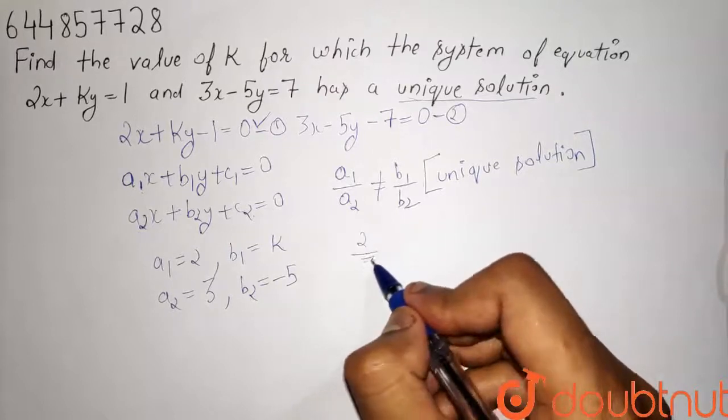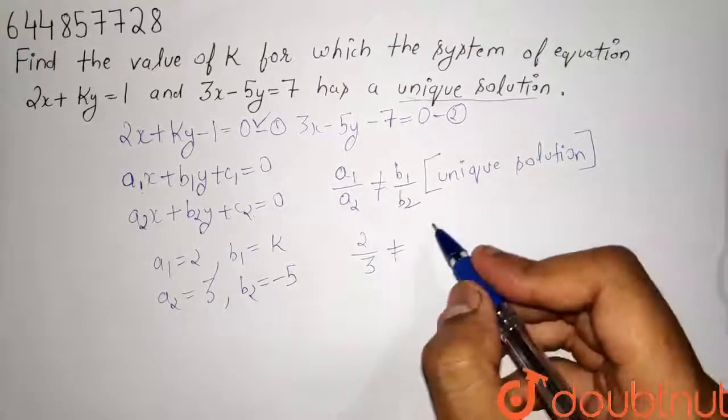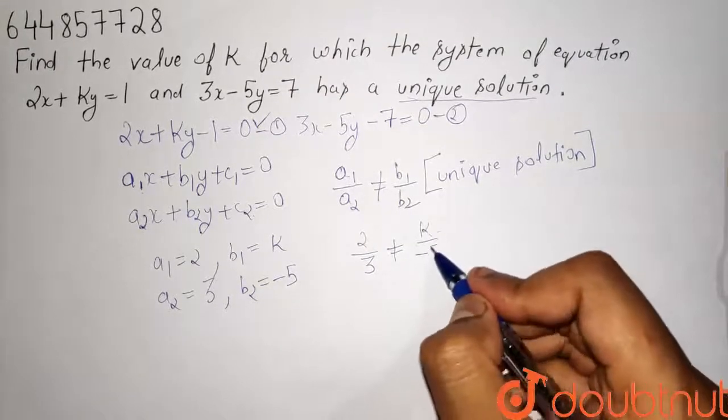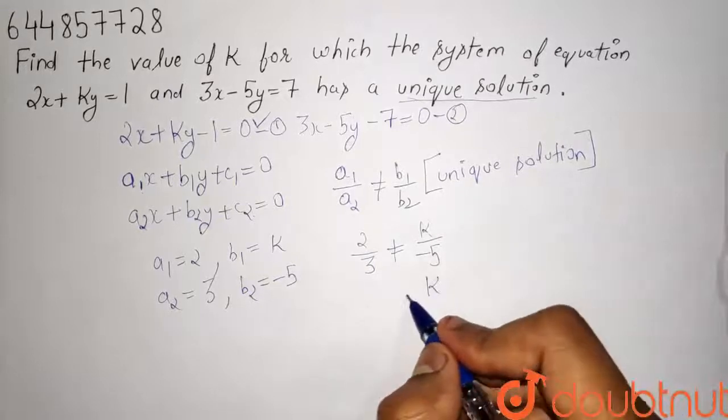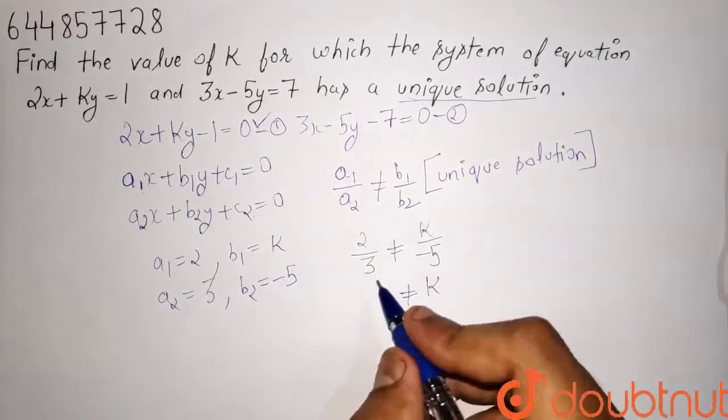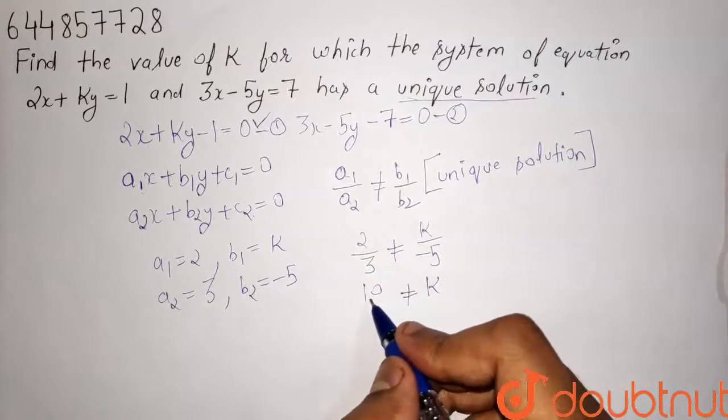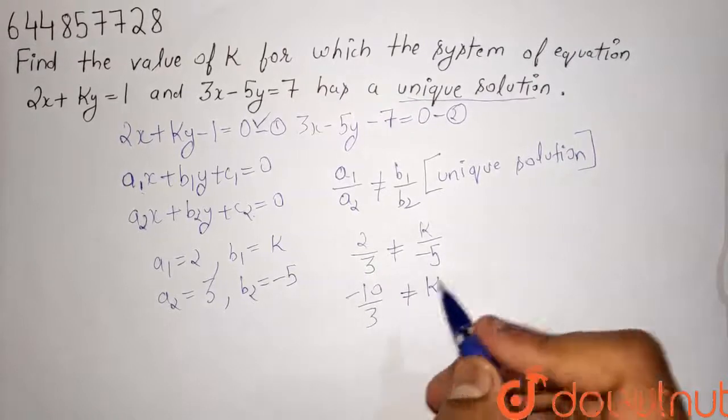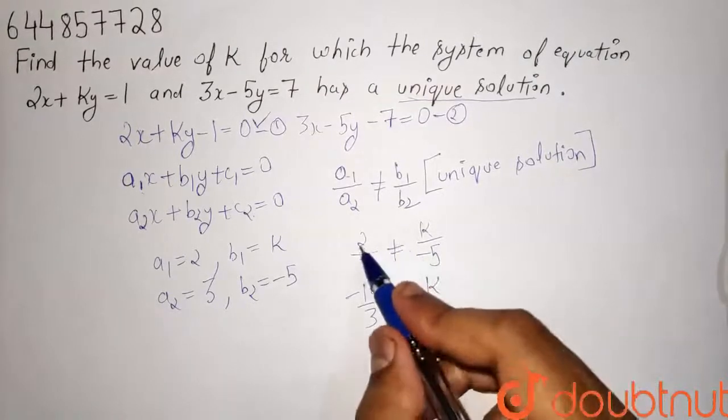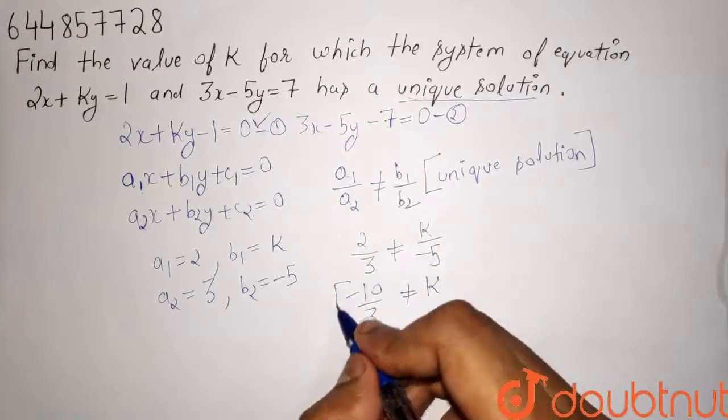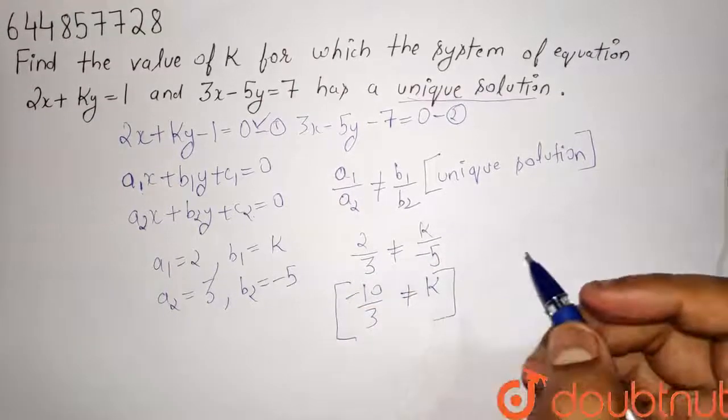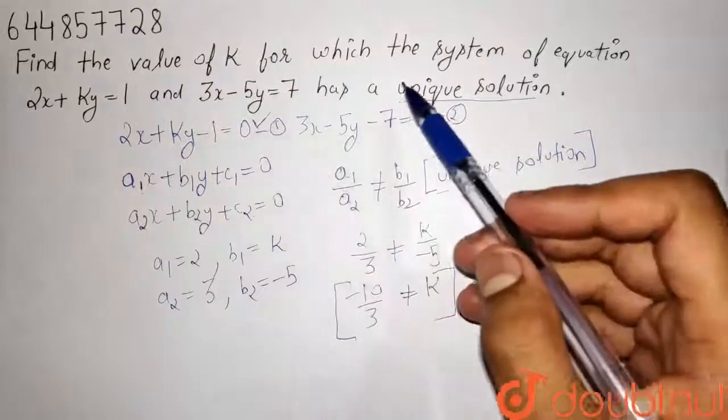it will be 2/3 not equals to k/(-5), so k not equals to -10/3. We have to tell the values of k for the system of equations to have a unique solution.